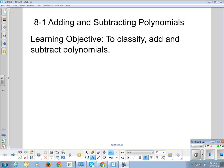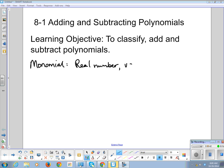So to classify something, we need to have a little bit more background and information. The first part of this is going to be vocabulary intensive. A monomial is a real number, variable, or a product of the two.